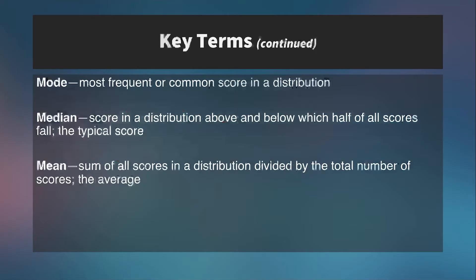The three primary measures of central tendency that we will use in this class — and that stats classes all over the world use, and that you will probably use for the rest of your life — are the mode, the median, and the mean. The mode is the most frequent or common score in a distribution. So if you have 10 people taking a test out of 10 points, and 5 of them score 9s, that would be the mode because it's the most frequent score.